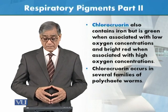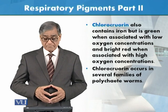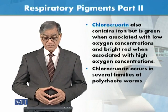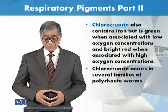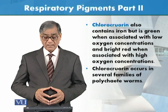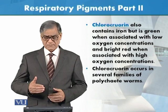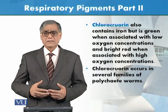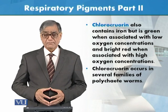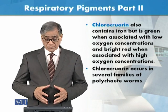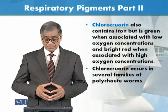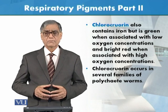Chlorochorin also contains iron but is green when associated with low oxygen concentration, and bright red when associated with high oxygen concentration. This depends on the composition of these pigments. Chlorochorin occurs in several families of polychaete worms.